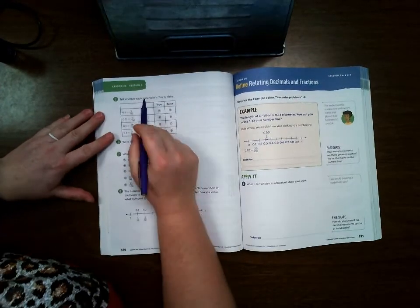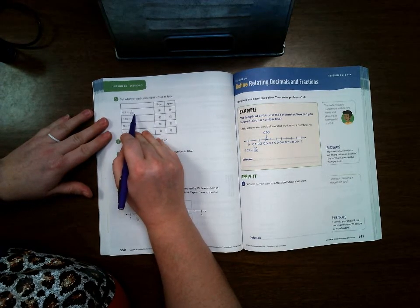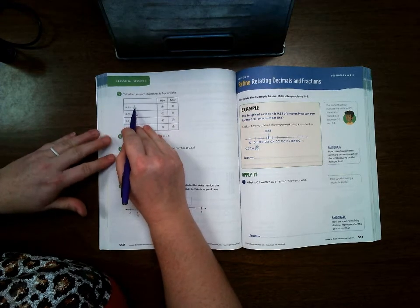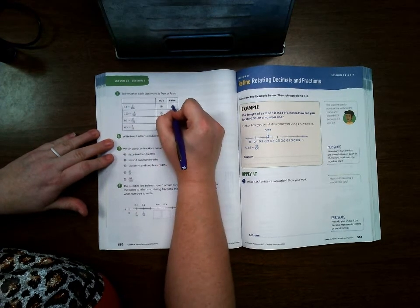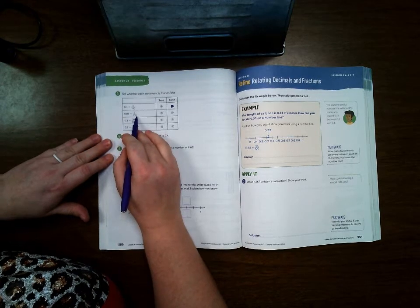Page 550. Tell whether each statement is true or false. Three tenths is the same as three one-hundredths? Well, even when you read that, you can tell that 3/10 and 3/100 are not the same. Three one-hundredths is the same as three one-hundredths? Yes.